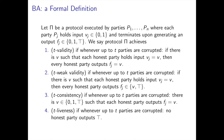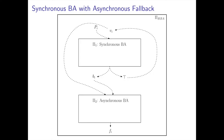Another kind of validity property is weak validity: if parties have agreement on a bit before executing the protocol, they either output this bit or output ⊤. We require this weaker form of validity when the network is asynchronous. To achieve a BA protocol secure up to t_s corruptions when synchronous and up to t_a corruptions when asynchronous, the main idea — due to Blum, Katz and Loss (2019) — is to run two BA protocols in succession.